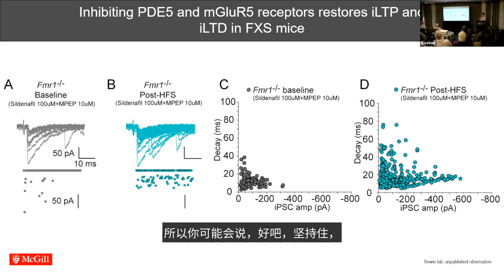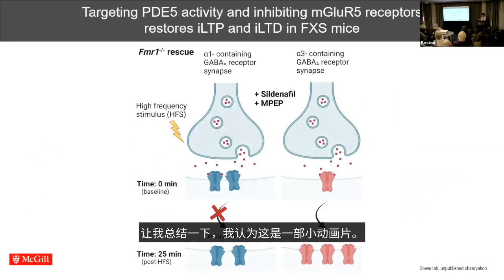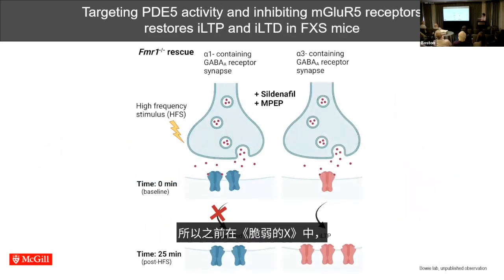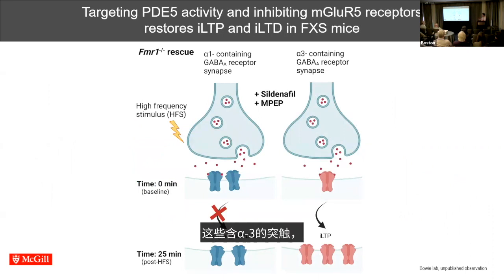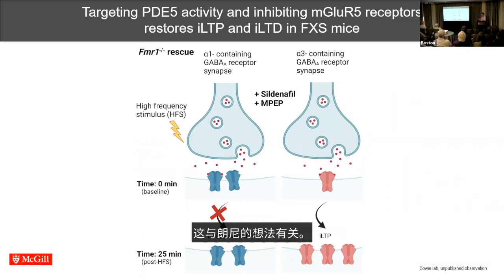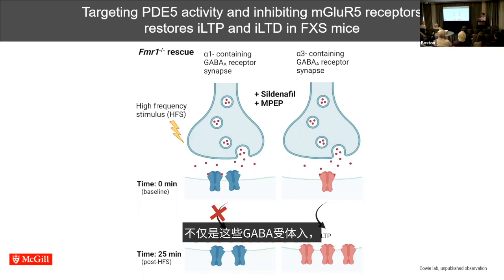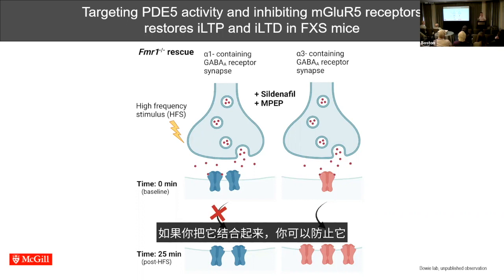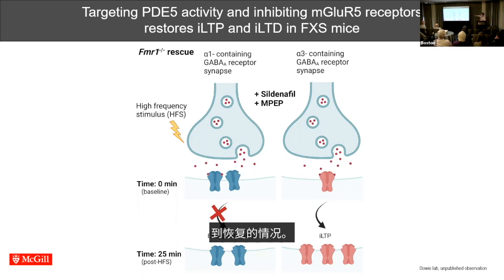To summarize with a cartoon: in fragile X you cannot potentiate alpha-3-containing synapses, but with phosphodiesterase-5 inhibition you can rescue that. Nobody had really thought about the fact that not only are GABA receptors failing to be inserted, they're being actively pulled off at the same time in fragile X — and you can prevent that with drugs blocking mGluR5. Combined, you can get almost back to the restored situation.